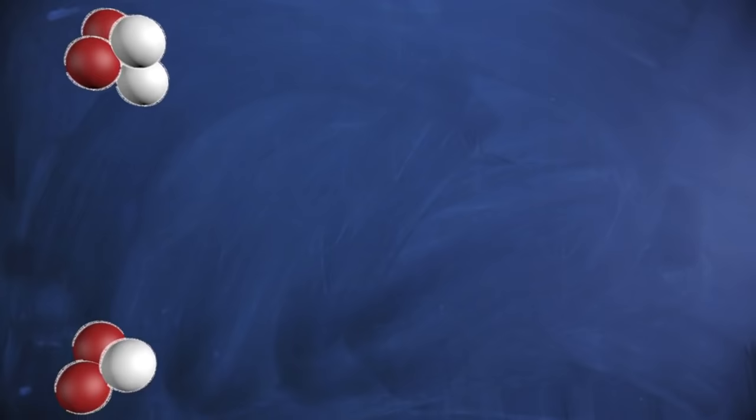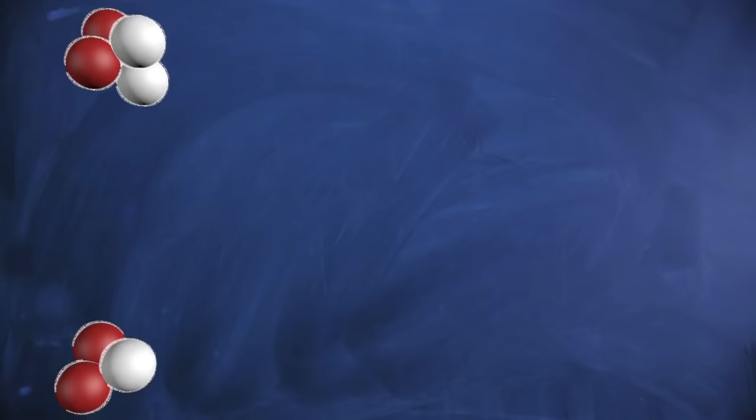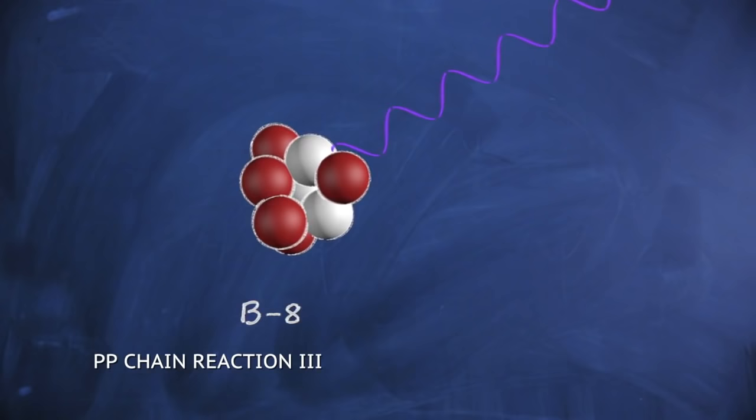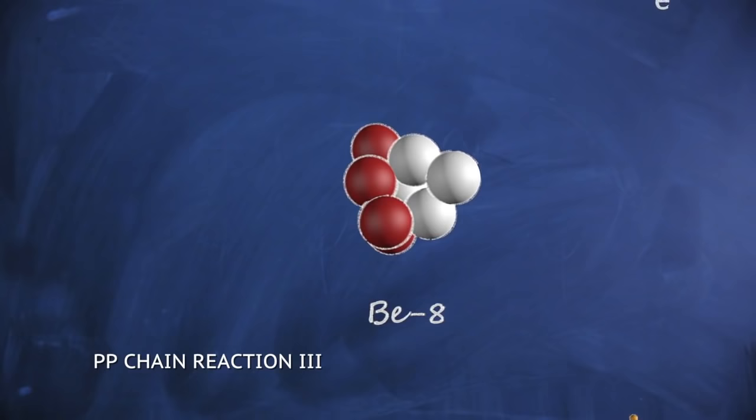The most energetic neutrinos are produced in the so-called proton-proton three chain reactions, but are much less abundant as this reaction is far less probable, accounting for only 0.11 percent of the energy produced in the sun.